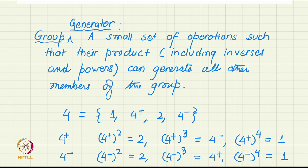It is not even necessary that the set of generators be minimal. Sometimes, for convenience or for other reasons related to how you want to use the generators, you can select a generator set that is not truly minimal. For example, if 4+ is the generator, taking both 4+ and 2 also works as a generator, even though 2 is itself generated by 4+. This is mathematically allowed and sometimes used.